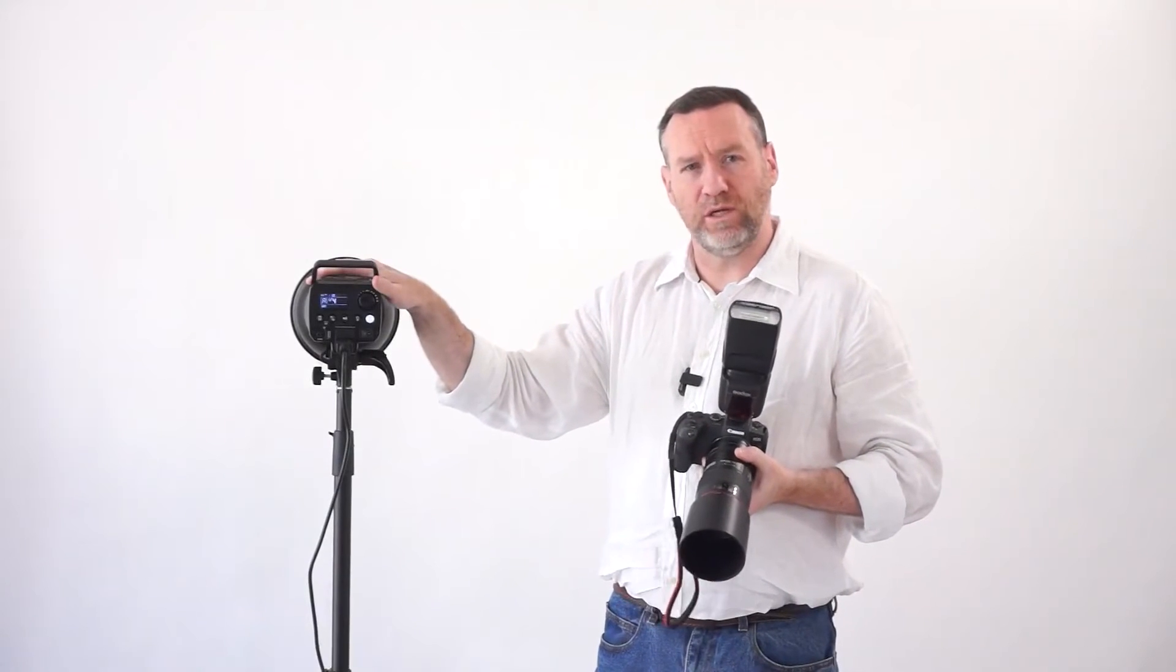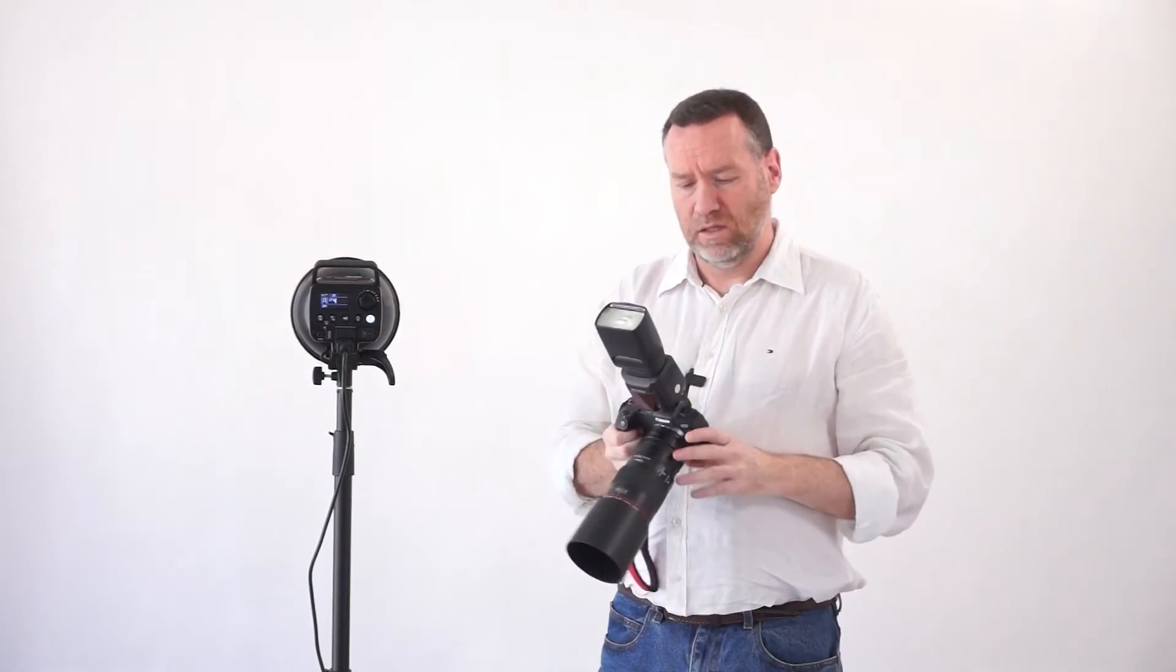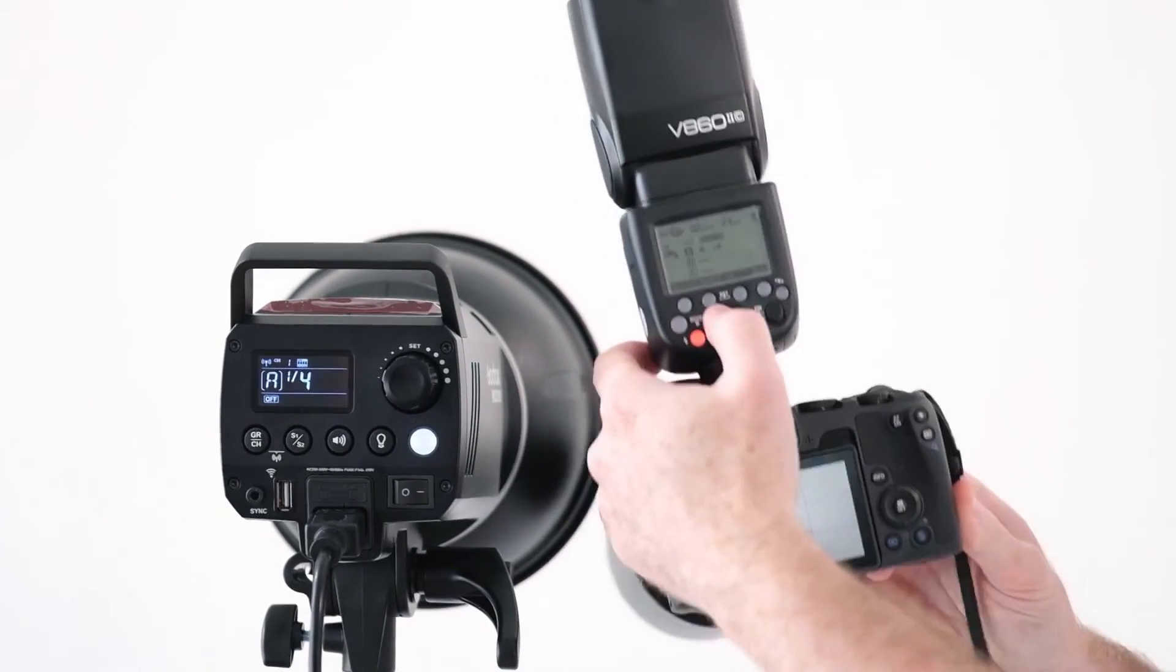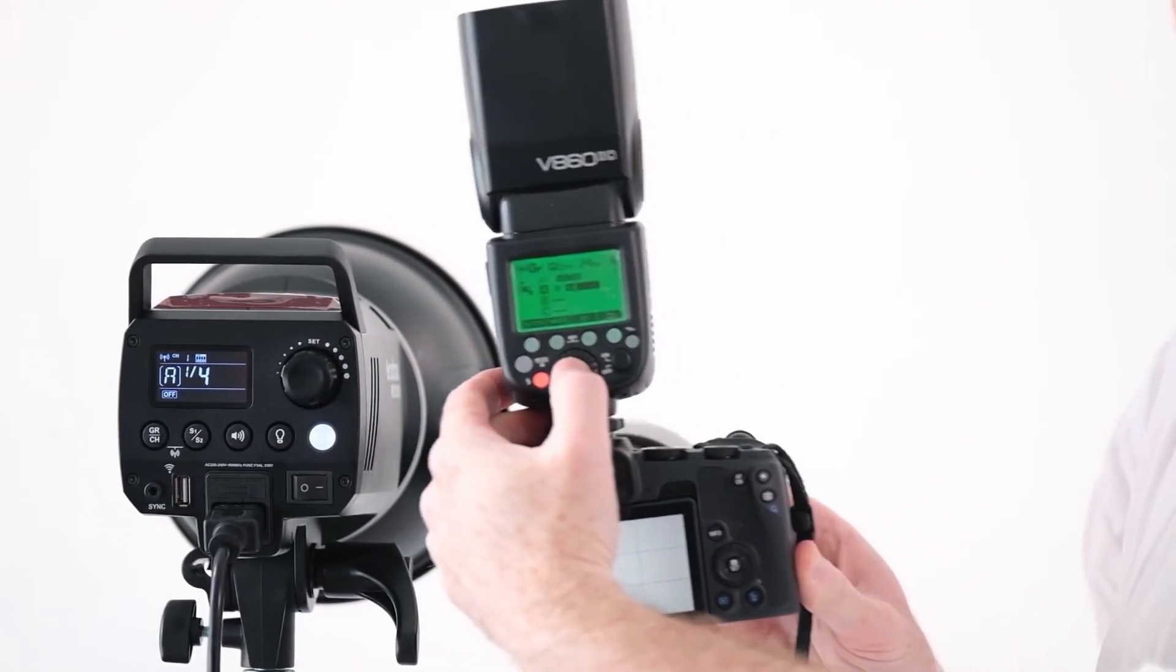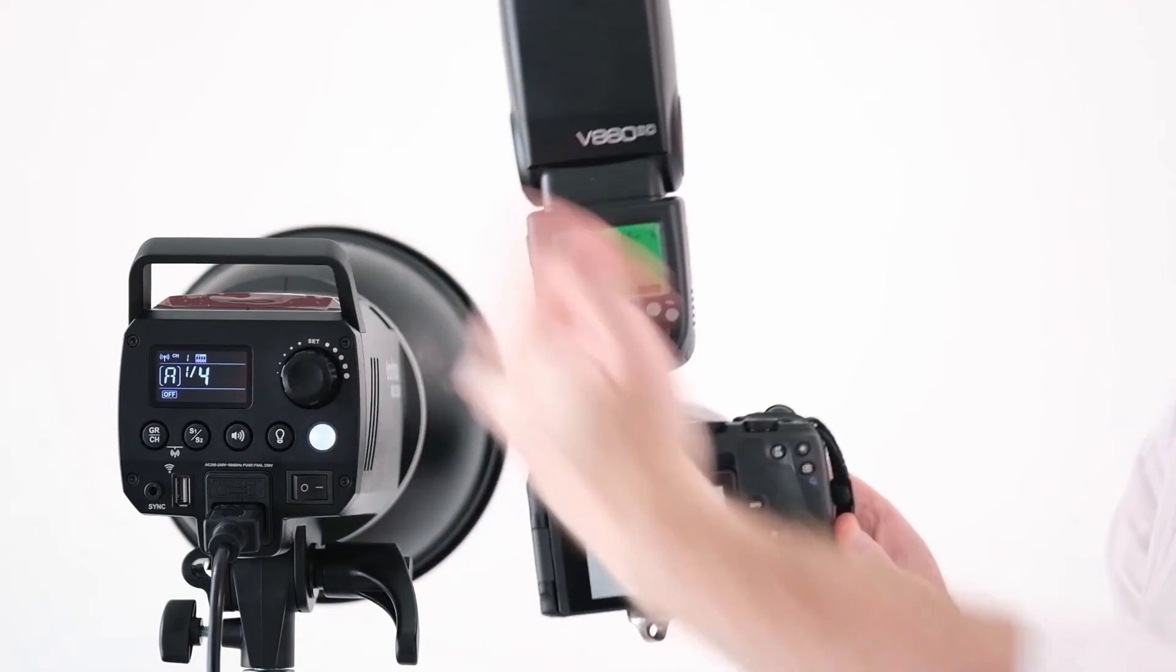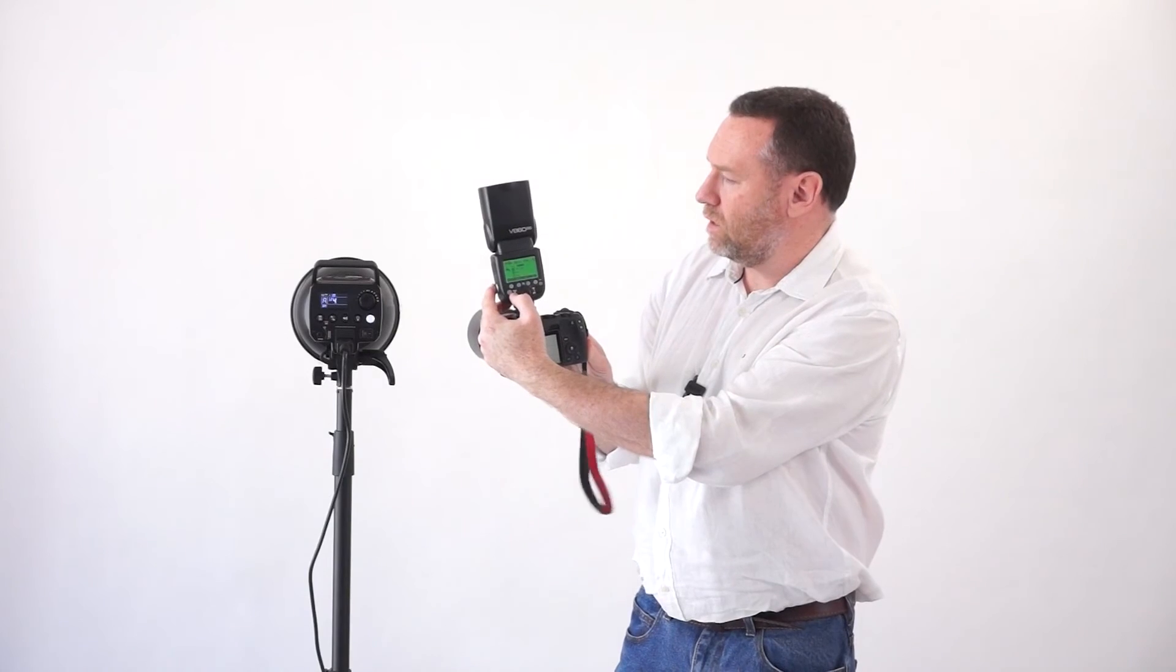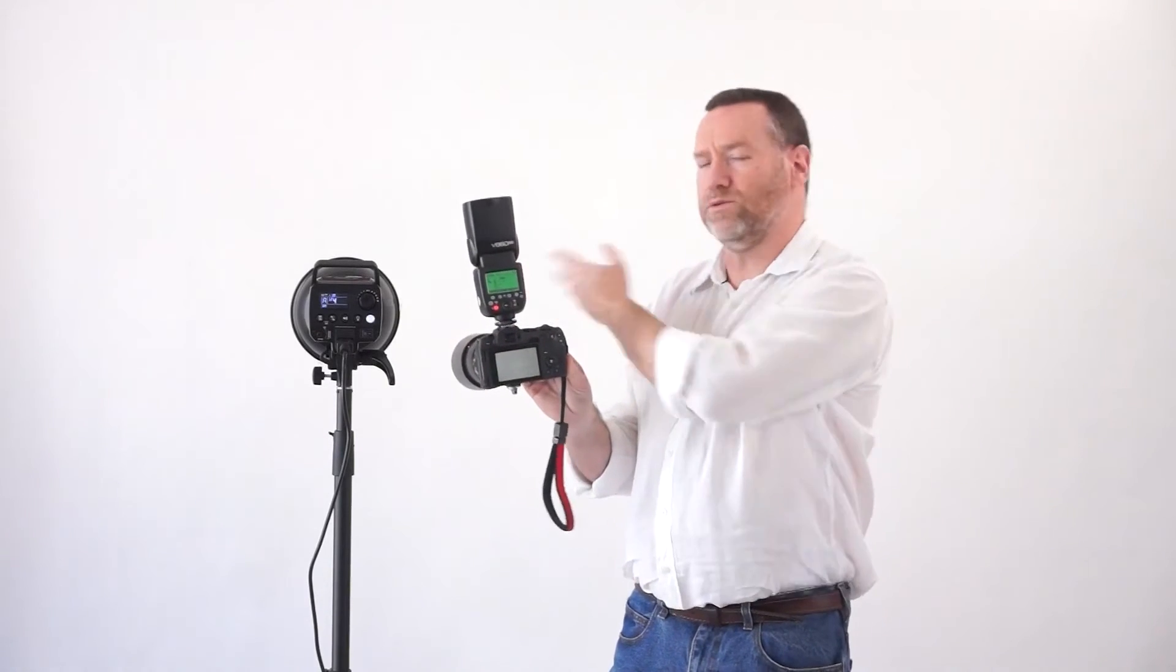Of course with the Godox radio system you can use a speed light itself as a radio master. So I've got this one currently dialed in to quarter power for group A. I've got the channels and everything dialed in. So if I now take a test fire here. Right the actual studio strobe fired the MS-300 fired with that.